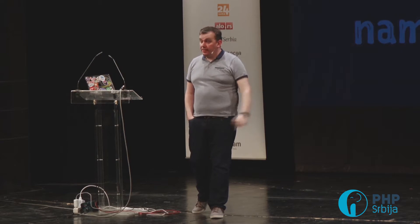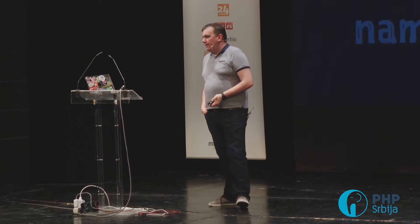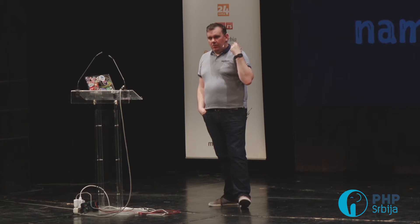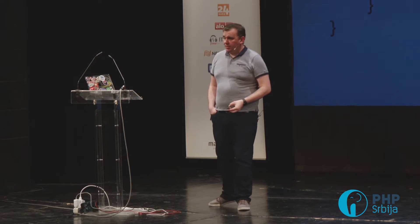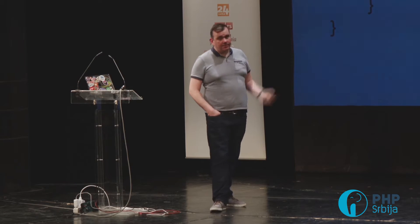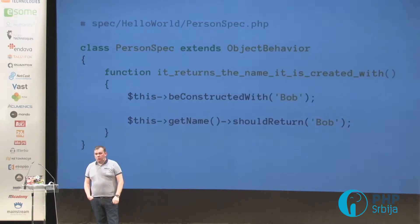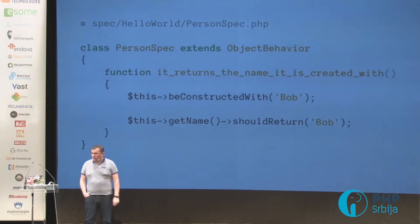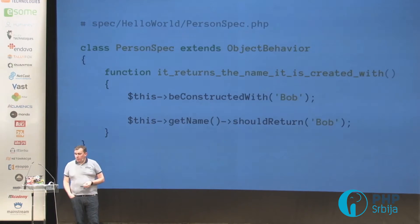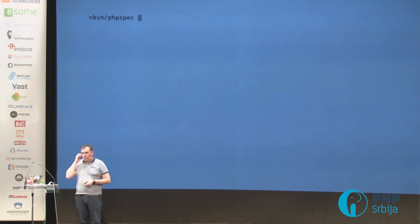So the next step is to go and build the Person. I'll go through the whole cycle again a bit quicker to give you a feel for what this workflow feels like. When you ask Bob for his name he's going to say 'my name's Bob.' Describe a Person, write the first example: it returns the name it was created with. There's support for named static constructors if that's the style you use, but for now: 'be constructed with Bob, getName should return Bob.' When I run it, Person doesn't exist — do you want to create Person?